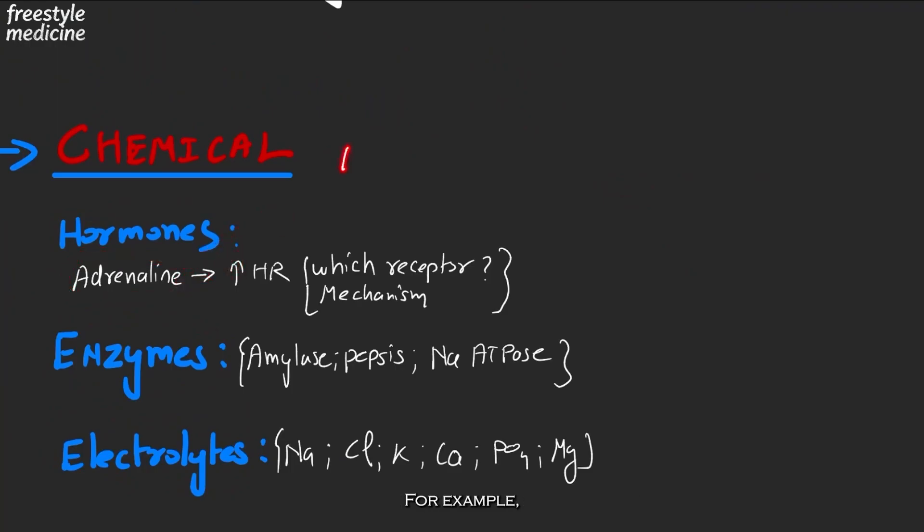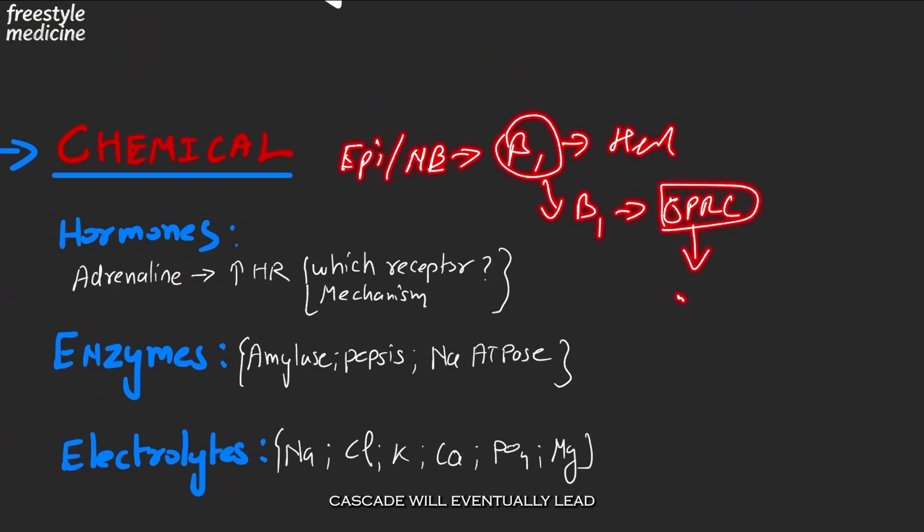Hormones, for example adrenaline, can increase the heart rate. How can adrenaline increase the heart rate? We have epinephrine or norepinephrine; they go and act on the beta-1 receptors of the heart. This activation of beta-1 receptor will basically lead to activation of the GPCR cascade. This GPCR cascade will eventually lead to activation of adenylate cyclase and activation of protein kinase A.